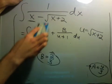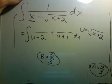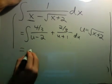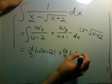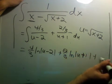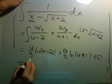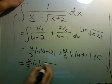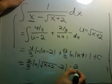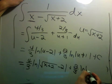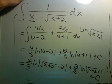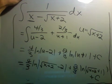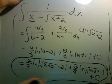Let's put that in for a and b: four-thirds and two-thirds. Integrating this is no big deal — I have four-thirds natural log of (u minus 2) plus two-thirds natural log of (u plus 1) plus C. And now I put the substitution back in to get the final answer.